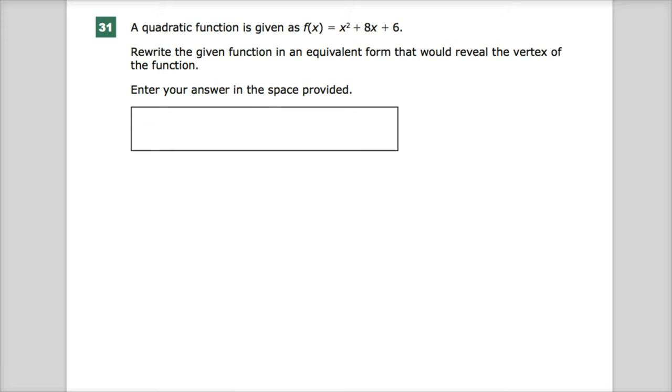They give you a quadratic function, x squared plus 8x plus 6, and they want you to rewrite the given function in an equivalent form that would reveal the vertex of the function. I only wish they had a form that revealed the vertex. Oh, they do. It's called vertex form. So vertex form is y equals a times x minus h squared plus k. There's a bunch of ways to get from a to b here. You could complete the square.